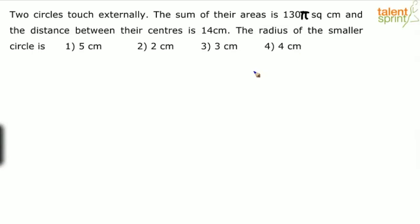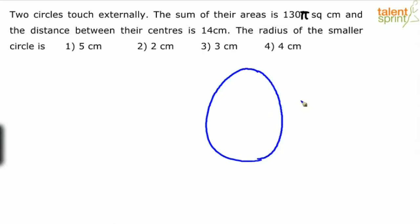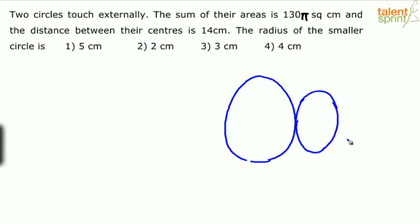So basically two circles touch externally and the sum of the areas is given as 135 square centimeters. Let's understand the figure here. This is circle one and this is circle two. Please adjust with the diagram. Let's say the larger circle has radius capital R and the smaller one has radius small r. The two circles are touching externally, because that's what is given.